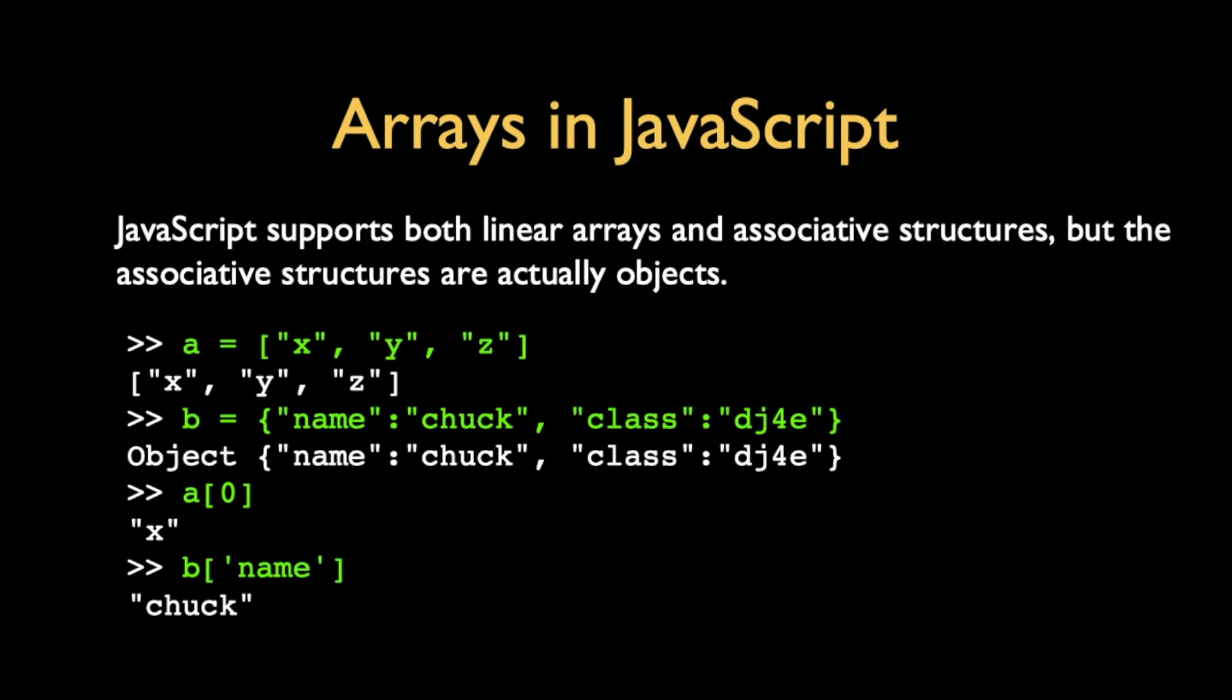JavaScript has arrays. They look a lot like Python lists. So here we have an array that's three strings. JavaScript has an associative structure but it's not an associative array. It's more like a dictionary but it's not. It's an object. Objects can be many things. We'll have a whole lecture on objects. But right now they kind of look like a dictionary. Key, value, pair. Key, value, pair. Key is name, value is Chuck. Key is class, value is dj4e. And so when you print that out, away you go.